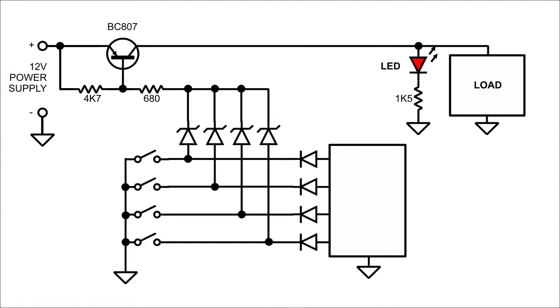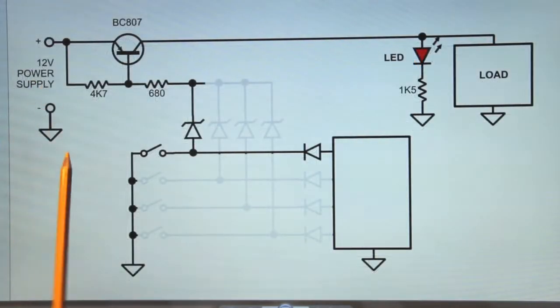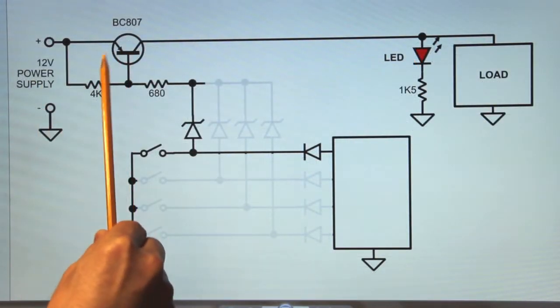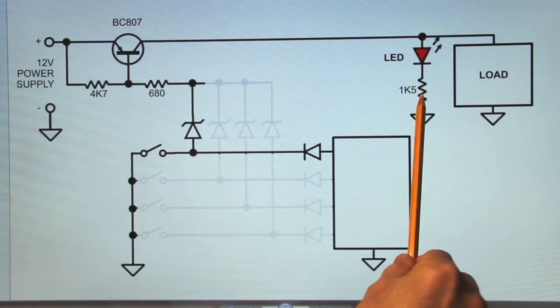Straight to the point, this is an excerpt of the relevant part of the circuit which is really simple indeed. It is just a PNP BC807 transistor which drives a load and an LED through a resistor.